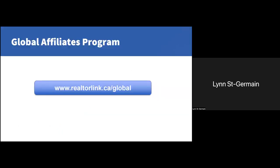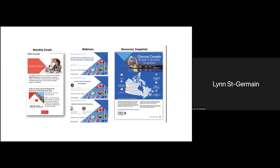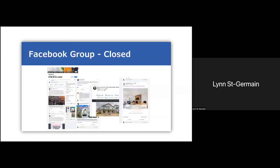To join the global affiliates program, go to RealtorLink.ca/global. It is completely free for CREA members. Once you have opted in, you will have access to many resources including free training webinars and statistics snapshots of specific regions. You'll also have access to a closed Facebook group for members of the global program, as well as a global directory. The global directory allows you to search for international realtors — two great tools to start networking with international realtors.